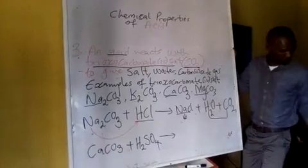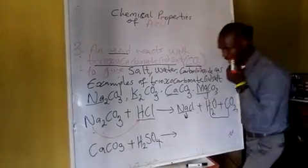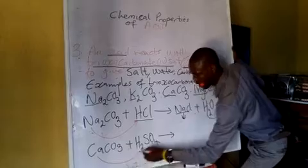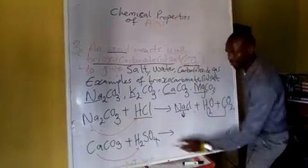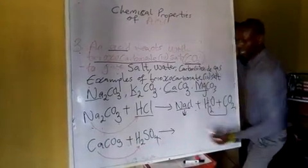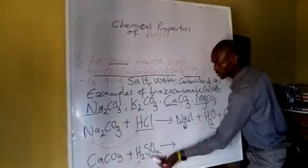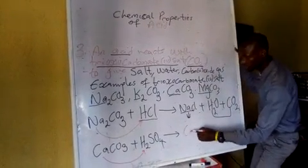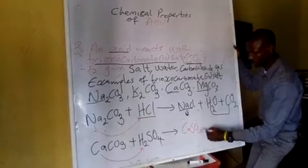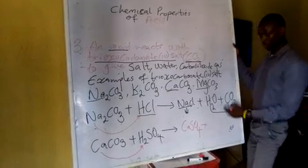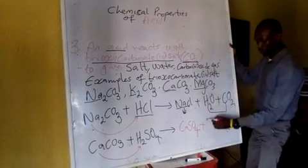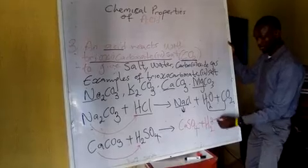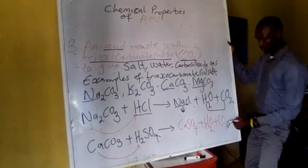Like I explained earlier, the calcium here will come and replace the hydrogen. When the calcium replaces the hydrogen, it becomes another salt. That's why we have calcium sulfate, plus remember, the two constant products: water and carbon dioxide.